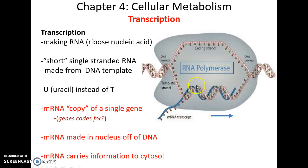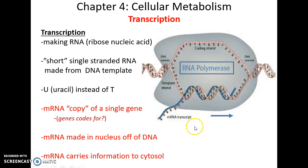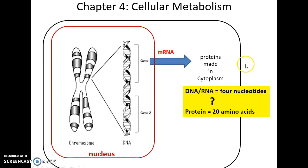Once in the cytosol, the mRNA must be turned into a protein. But wait — we have four nucleotides and 20 amino acids. How does this work?